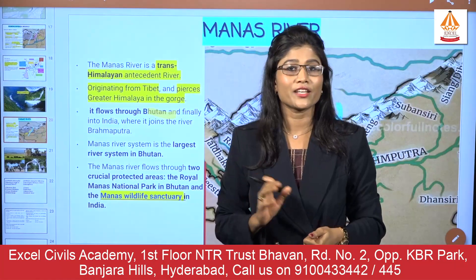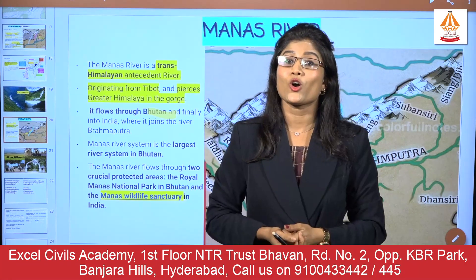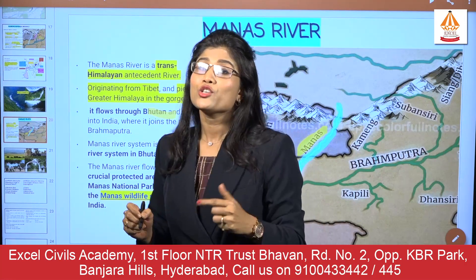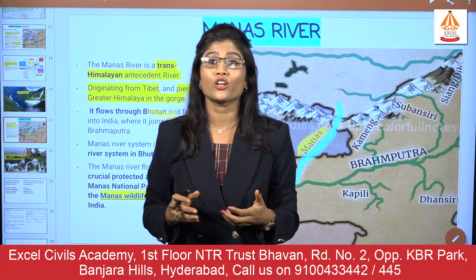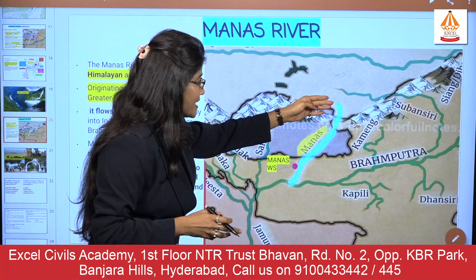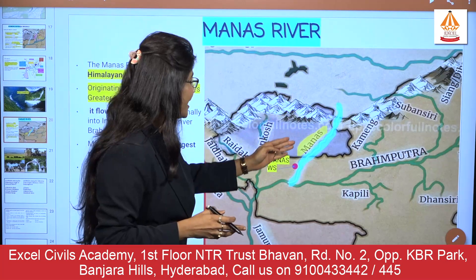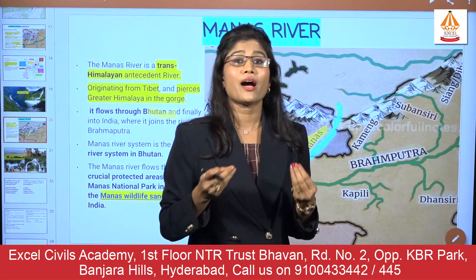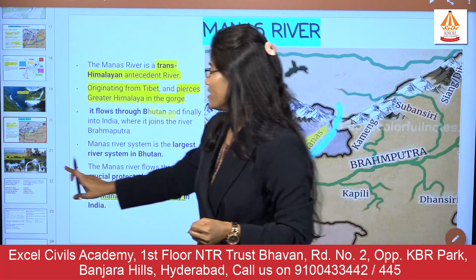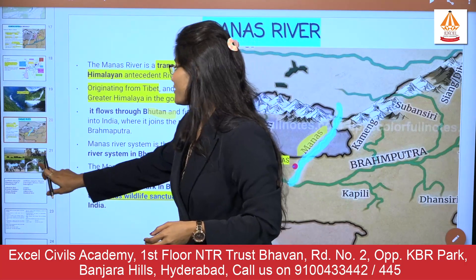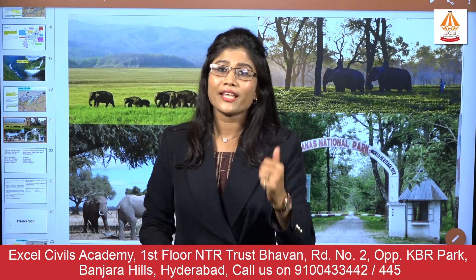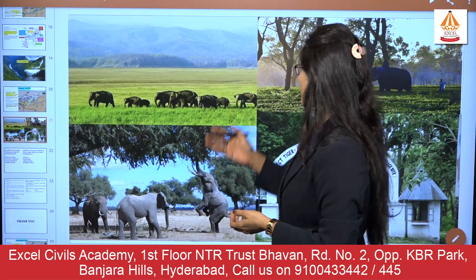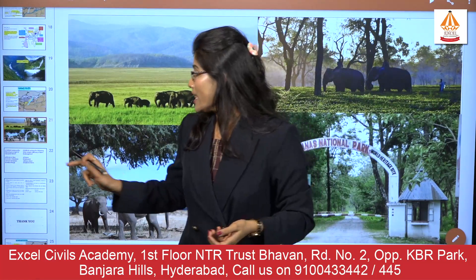The third important river is the Manas. River Manas is also a transboundary river. It flows from the western part of Bhutan and is known as the lifeline of Bhutan. It then enters India and confluences with the Brahmaputra in Assam. The Manas National Park, which is also a World Heritage Site and Tiger Reserve, is associated with this river. Important fauna here include elephants, clouded leopards, and Bengal tigers.